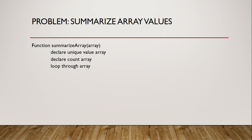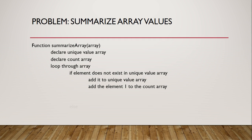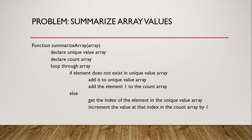We'll loop through the array and check each value. If the element doesn't exist in the unique value array, we need to add it to the unique value array and add a value of 1 to the count array. If the element already exists in the unique value array, then we need to get the index of that value in the unique array and increment the count array at that index by 1. Finally, we're going to return a two-dimensional array that contains both the unique values and the count of those unique values. In the case of our eagle array, there will only potentially be two unique values: active nest and inactive location, and we'll get a count of each.